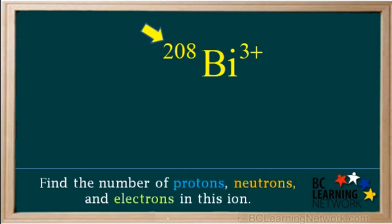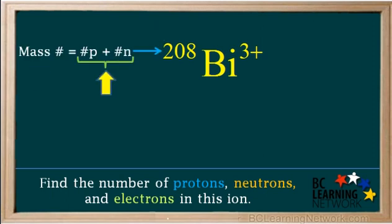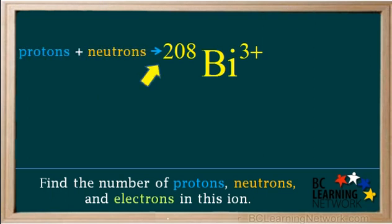First look at the number on the top left of the symbol. This is the mass number, which is the total number of protons plus neutrons. So the total number of protons plus neutrons in this ion is 208.